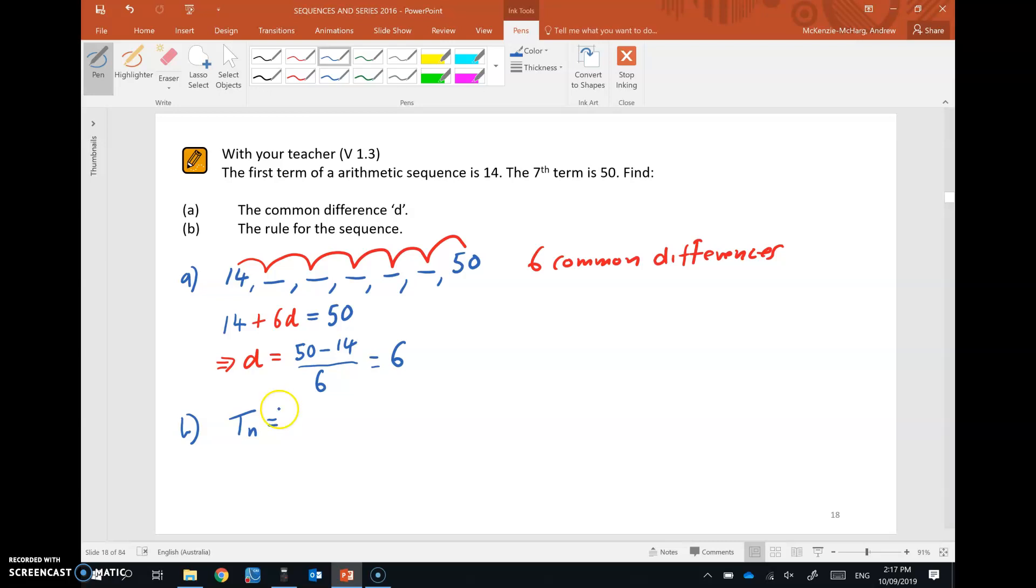Okay, I'll have a go at that now. So Tₙ equals the first term, 14, plus n take 1 times the common difference, 6. Then we expand the brackets, and then we bring that 14 and that negative 6 together. Because 14 take 6 is 8. So there's our sequence rule.